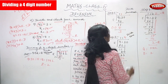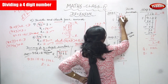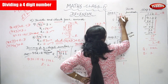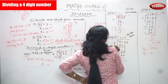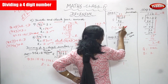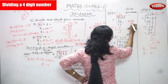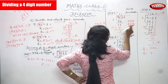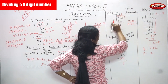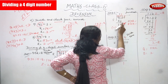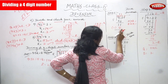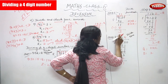Step two: divide hundreds. Thousands is done, now we focus on hundreds. The remainder is 1, so bring down the hundreds digit — we get 11. Compare 8 and 11: 11 is greater than 8. 8 goes into 11 once. 8 into 1 is 8 — write 8 below 11. Subtract: 11 minus 8 equals 3. Step two is complete.